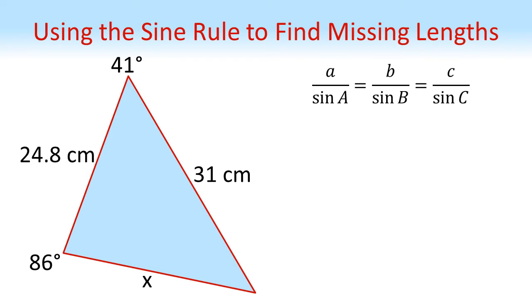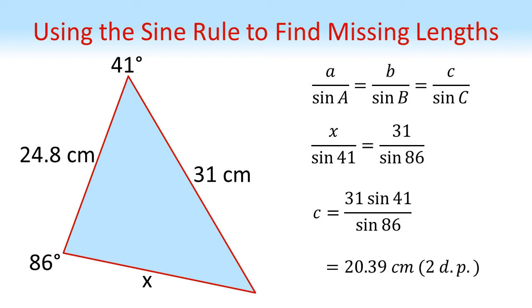So here's the sine rule. We've got to be careful now because there are three sides labeled on this triangle. All we need to do though is remember that we always use the side which is opposite a given angle. So x over sine 41 because they're opposite and 31 is opposite 86 degrees. So that's equal to 31 over sine 86. We don't need to use the 24.8 at all. Multiplying both sides by sine 41 gives us that x equals 31 sine 41 over sine 86, which is equal to 20.39 centimeters to two decimal places.